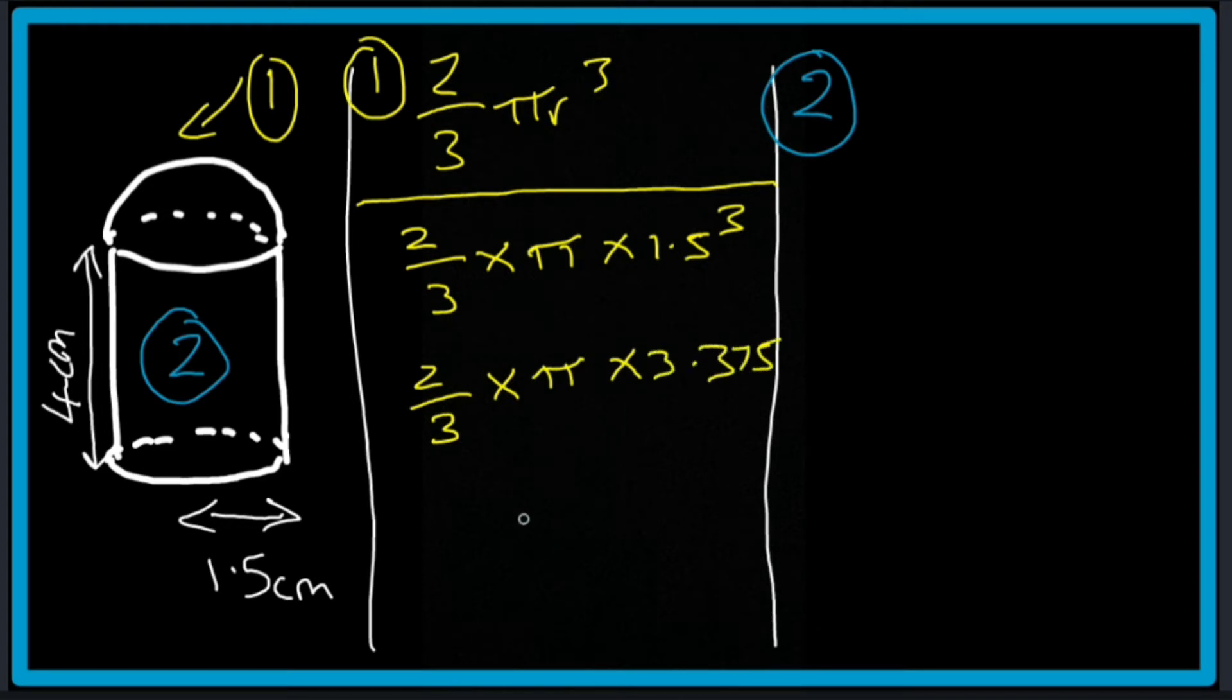And it gives me an answer of 9 over 4 pi. For the cylinder I use the formula pi r squared into height.